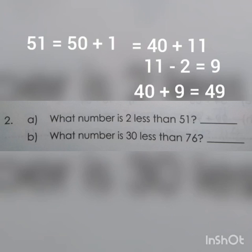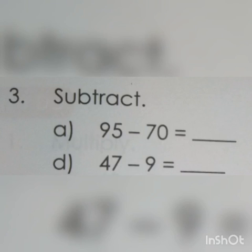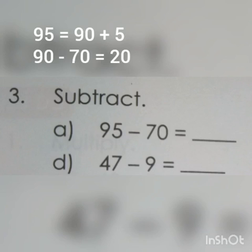Look at the first problem: 95 minus 70. Separate 95 as 90 plus 5. Now from 90 subtract 70. 90 minus 70 is 20. 20 plus 5 is 25. Therefore 95 minus 70 is 25.